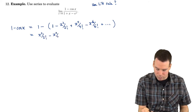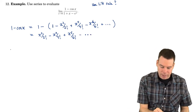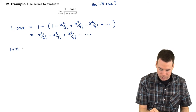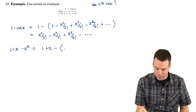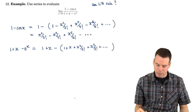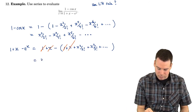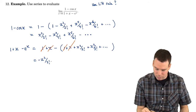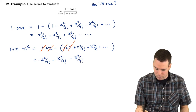So continuing with the numerator: ...plus x to the 6th over 6 factorial and so on. That's the numerator. Now, the series expansion of the denominator, 1 plus x minus e to the x, is: 1 plus x minus the exponential, which is 1 plus x plus x squared over 2 factorial plus x cubed over 3 factorial plus... We see that the ones cancel off, and what's left is negative x squared over 2 factorial because of the negative sign.